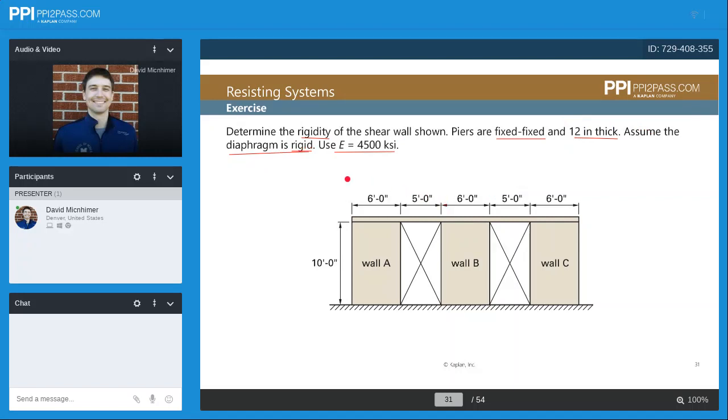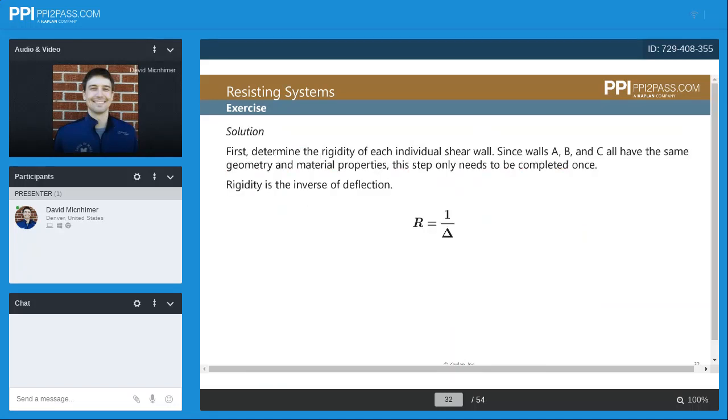We've got a height of all the walls of 10 feet, and we've got a length of all the walls of 6 feet because we aren't going to consider the 5-foot openings as part of the shear wall. So we've got walls A, B, and C. Let's look at the solution here.